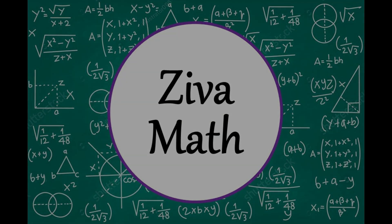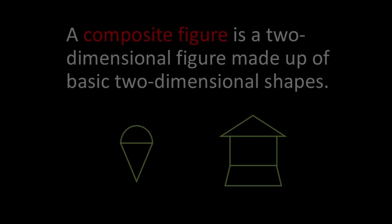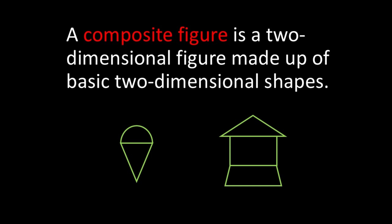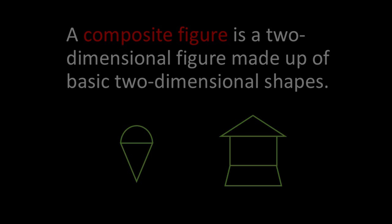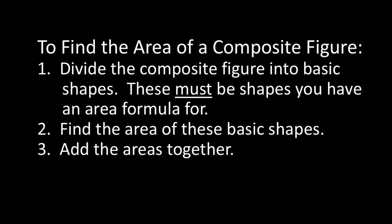Welcome to another Ziva Math video. In this video, we will find the area of composite figures. A composite figure is a two-dimensional figure made up of basic two-dimensional shapes. To find the area of a composite figure, you must first divide the composite figure into basic shapes that you have an area formula for. You'll then find the area of the basic shapes and add the areas together to have the total area of the complete composite figure.